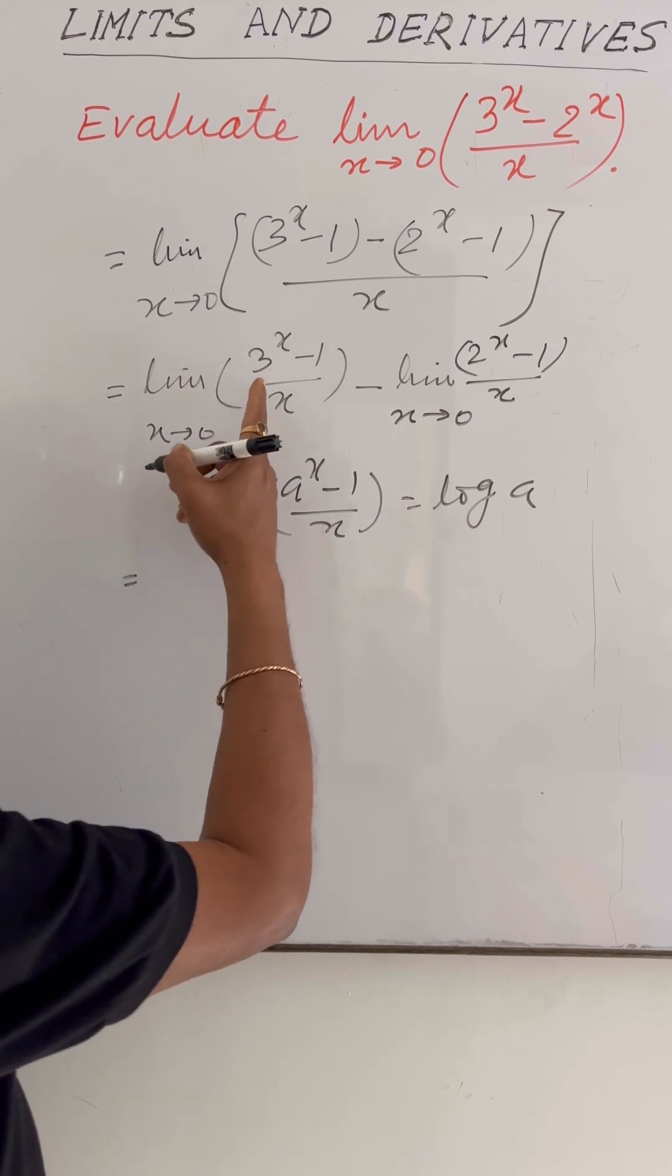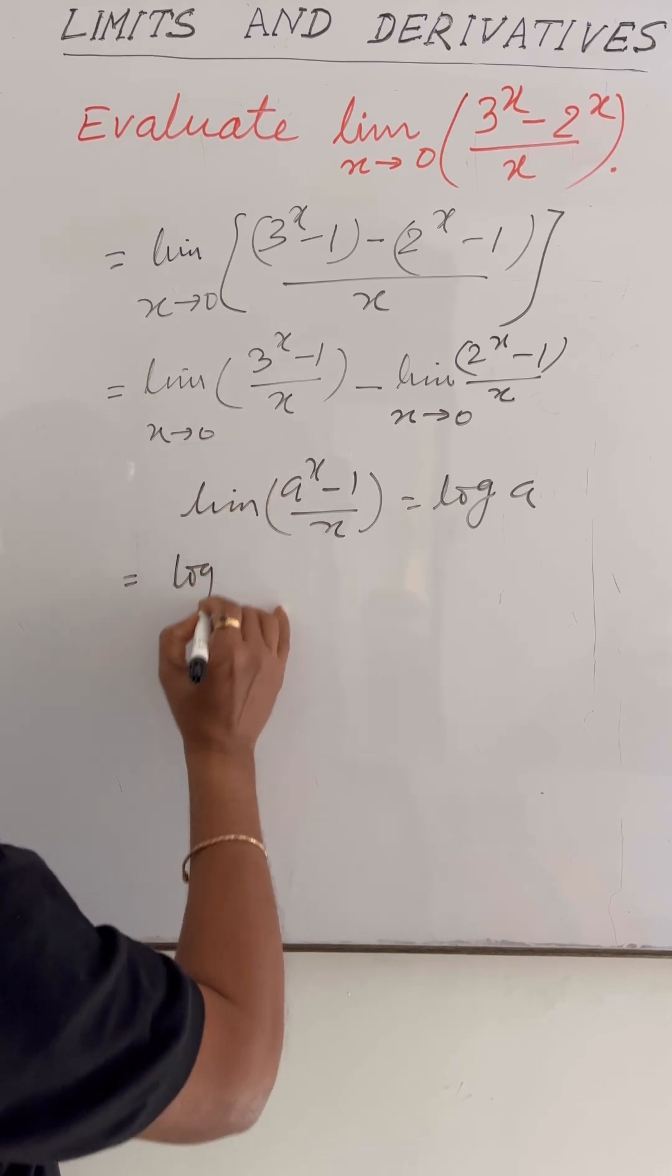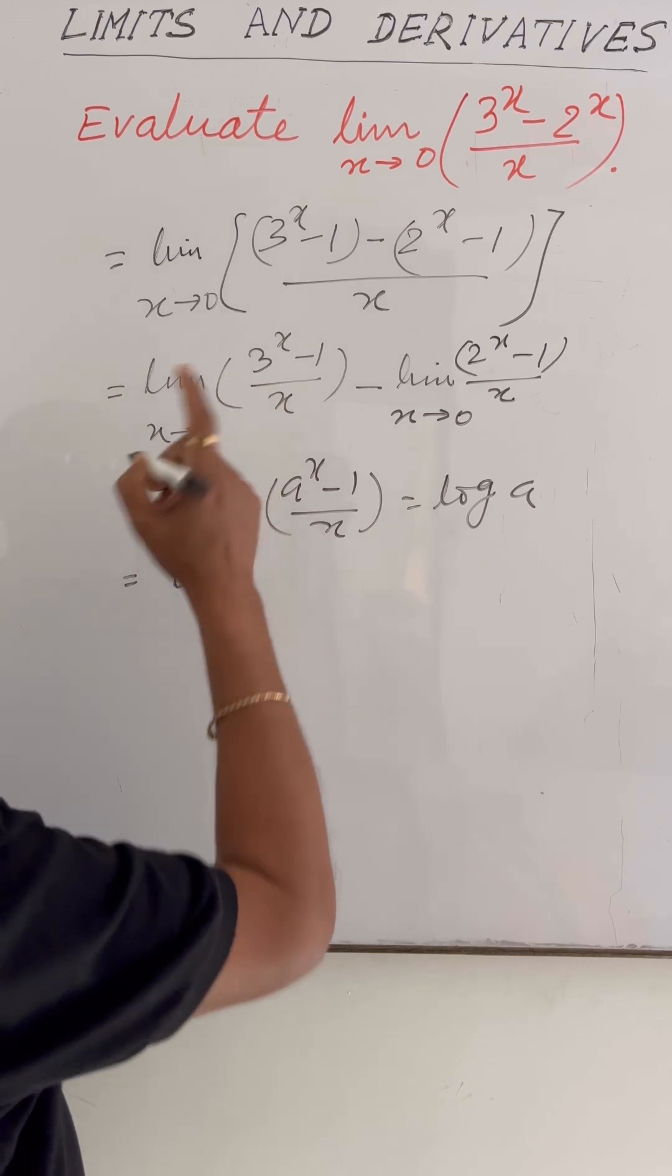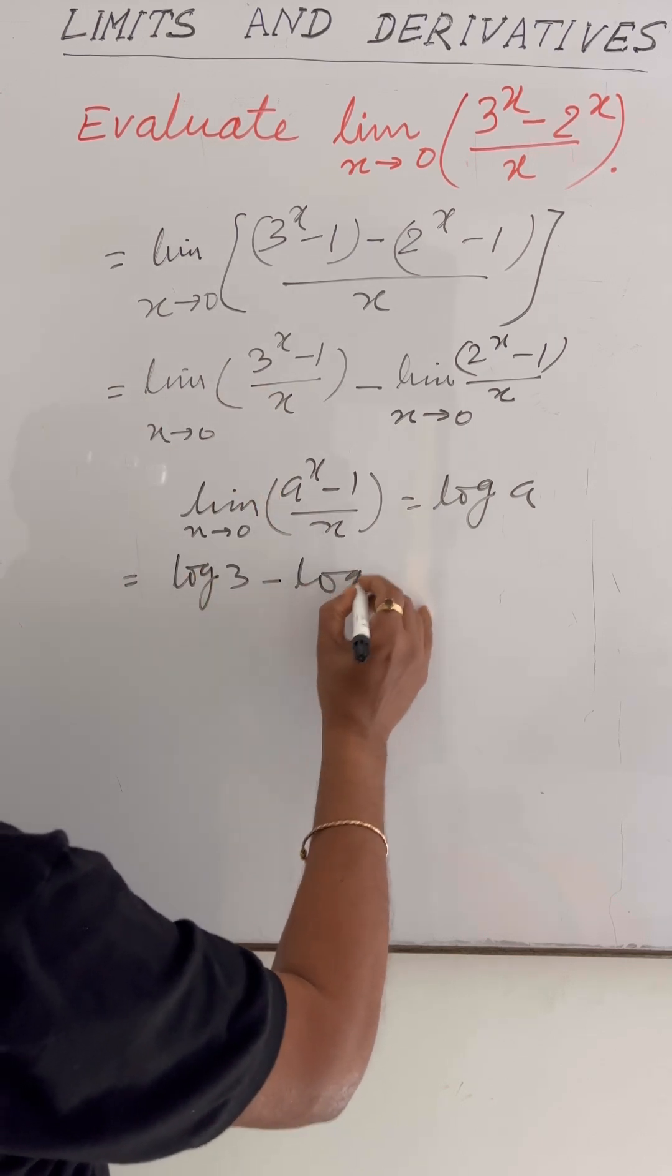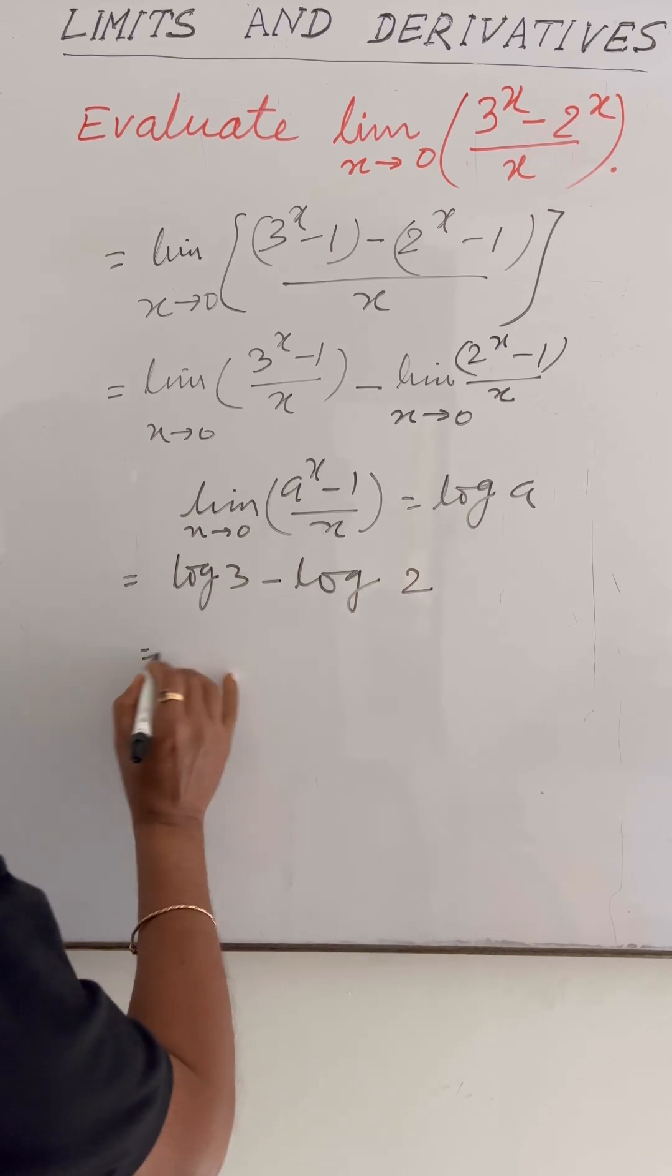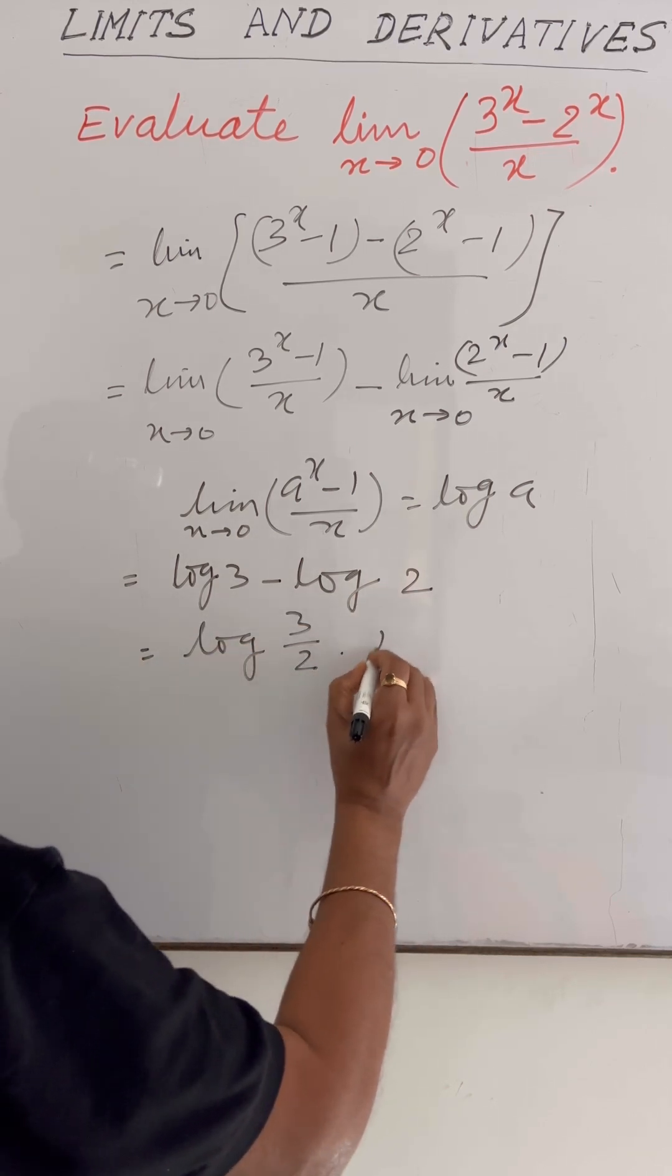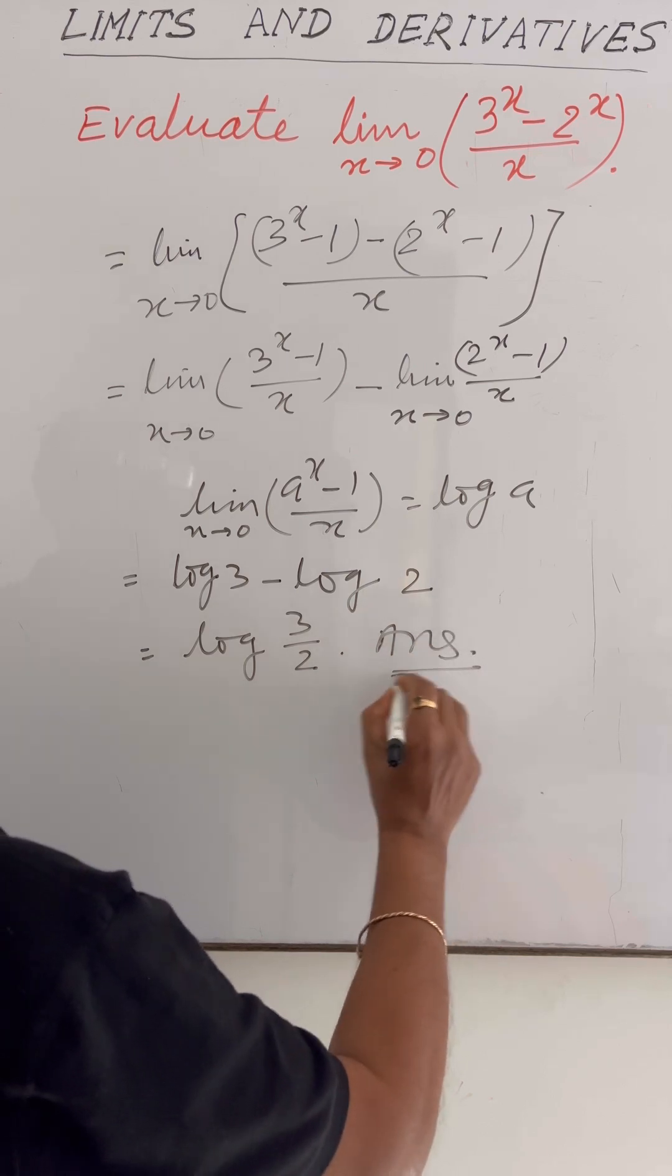So this can be written as log of 3 when x tends to 0, minus log of 2. This is equal to log of 3 by 2. So this is the answer of this limit.